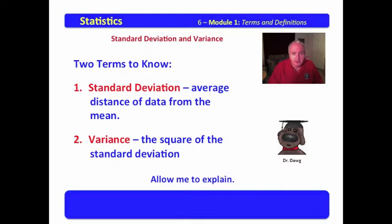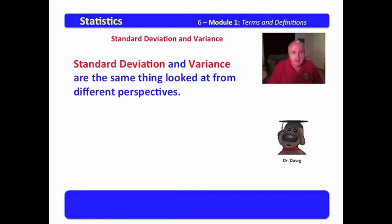Before you despair, please allow me to explain. Let's start with this idea: standard deviation and variance are the same things looked at from different perspectives. For example, if we take 3 squared equals 9, 3 could be the standard deviation.